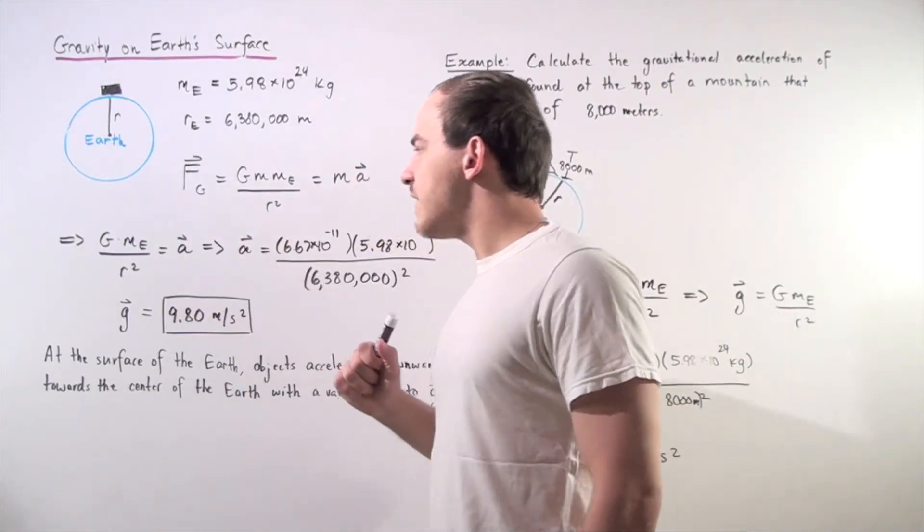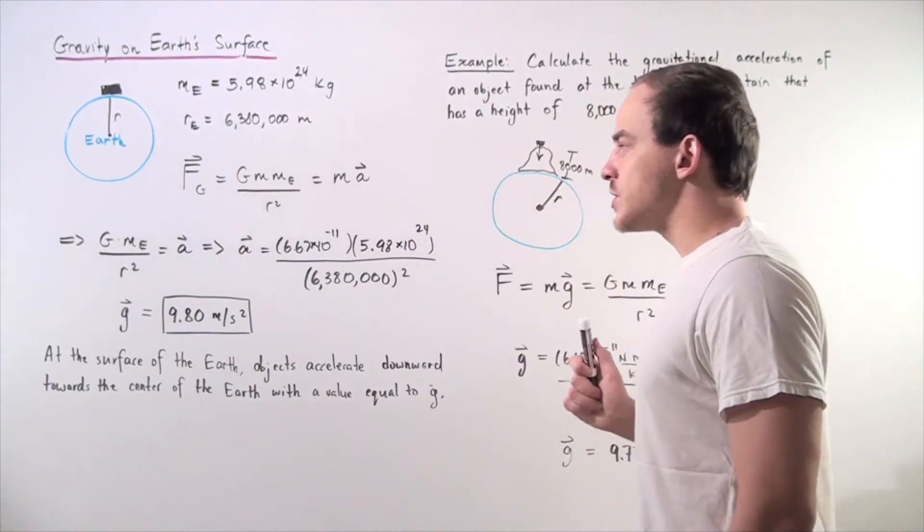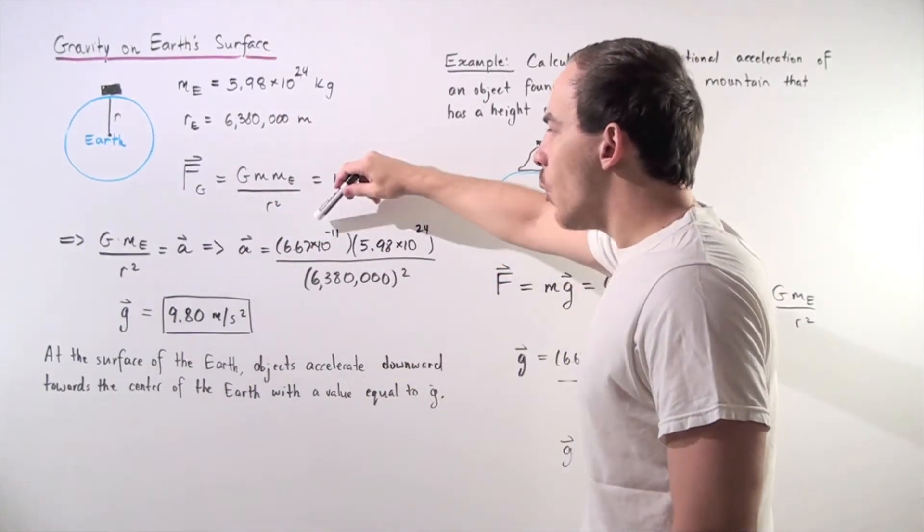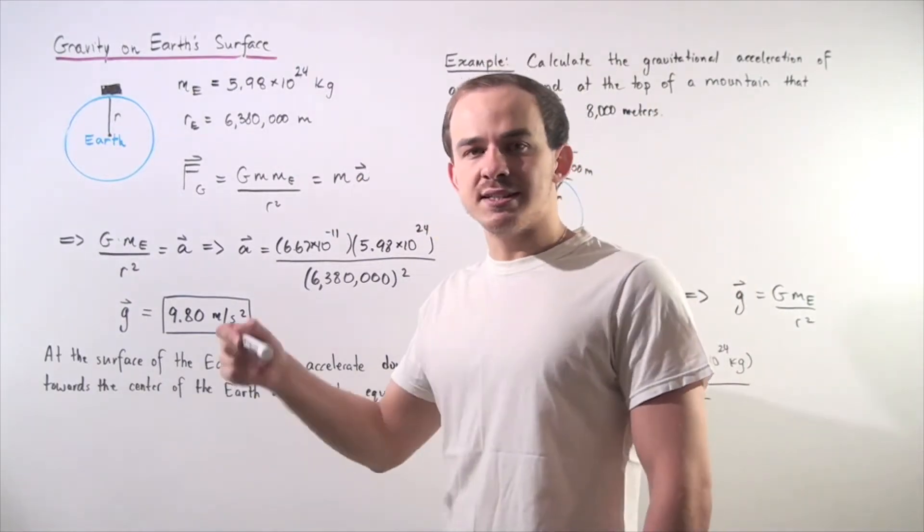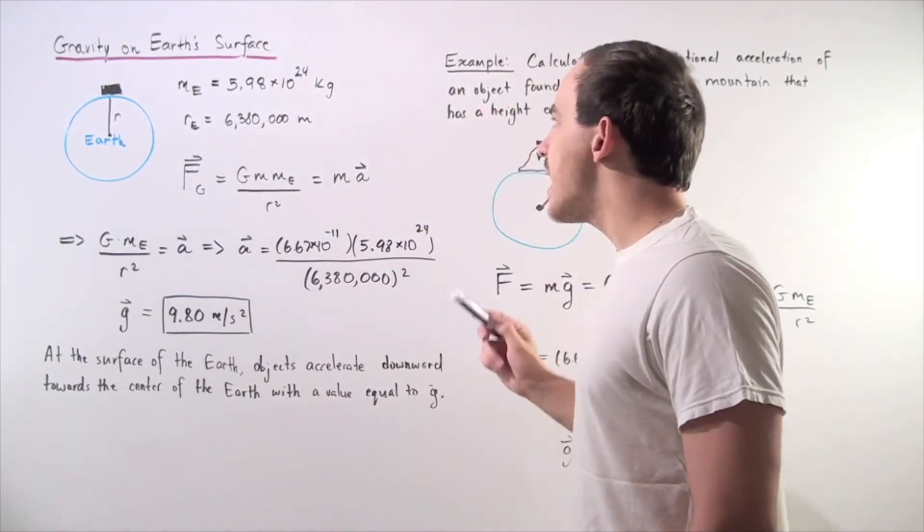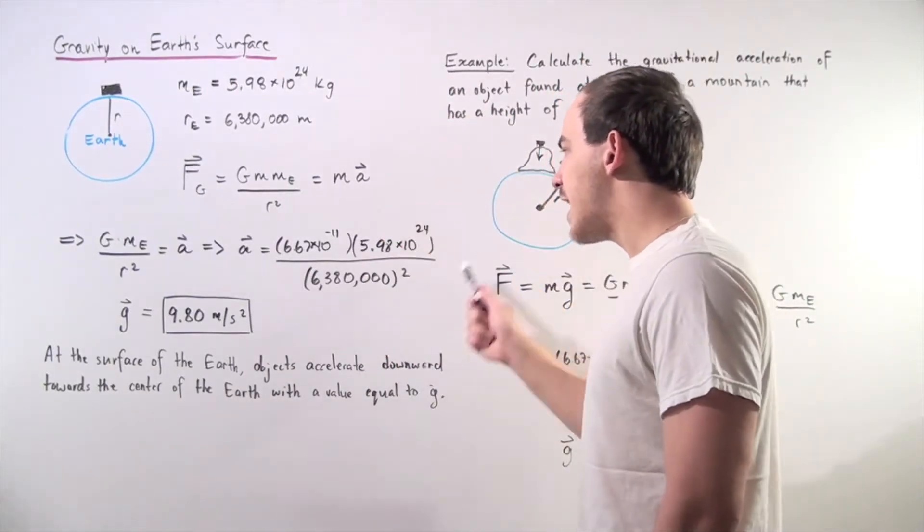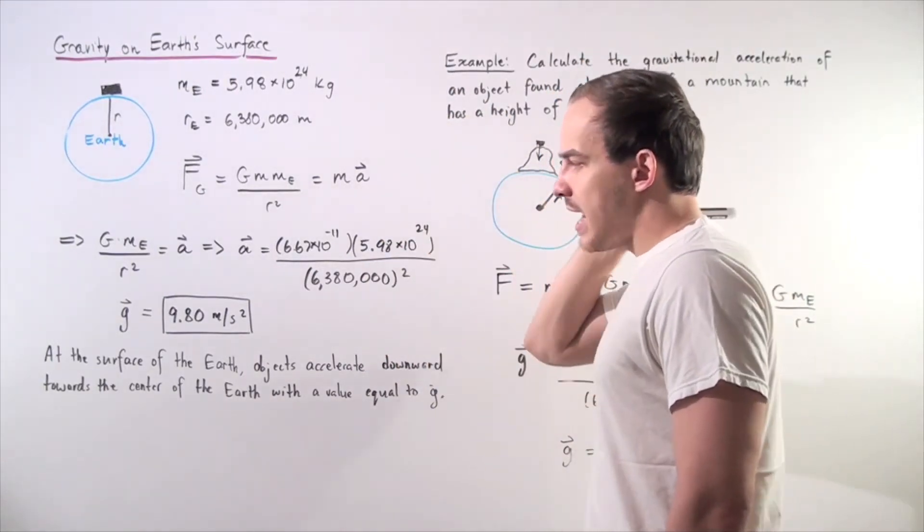Let's find what this value is on the surface of the Earth by plugging in our knowns. We know what the g is, 6.67 times 10 to the negative 11. We know what the mass is given here, and we know what the radius is given here. So, we plug the values in, we plug them into the calculator,